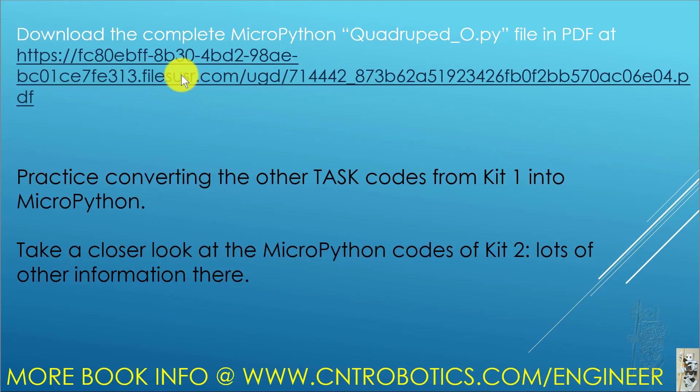So, if you go to this website you can download this whole Python code. It's in PDF. So, unfortunately, you have to retype. If you need to, you can email me and I can email you the actual Python. But on this website, it doesn't have regular text code, just the PDF file. So, if you are with me still so far, my next suggestion to you is practice converting the other task code from Kit 1 into MicroPython. You can learn a lot that way on your own, which is the best way. Also, take a closer look at the MicroPython Kit 2 code. A lot more other information is there too. And if you need more information about my new book there, you can visit this website. So, until next time.